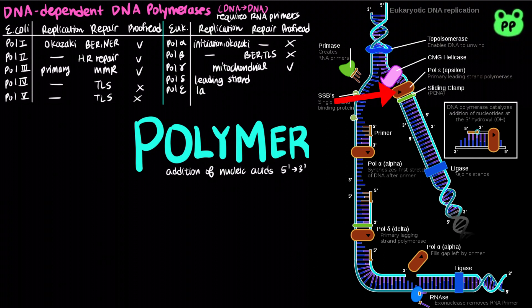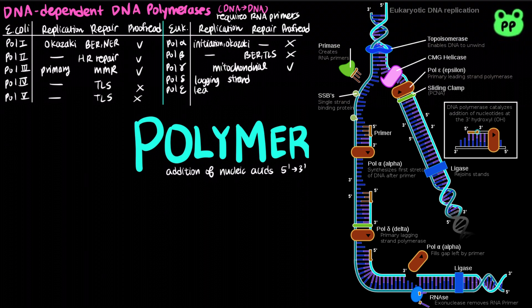DNA polymerase delta is mainly involved in the replication of the lagging strand, while DNA polymerase epsilon is mainly involved in the replication of the leading strand, as well as nucleotide excision repair.